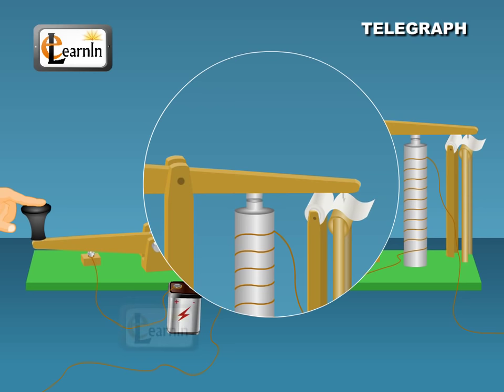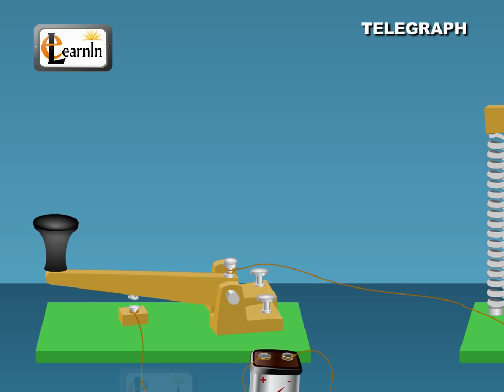On releasing the Morse key K, the circuit breaks and the armature goes to its original position, touching the rod K1.